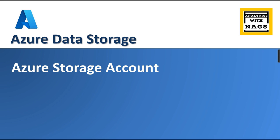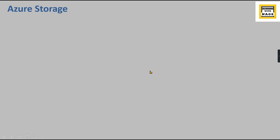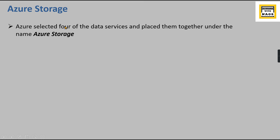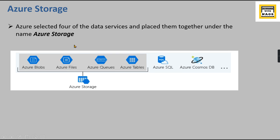If you are new to this channel, hit the subscribe button and press the bell icon for notifications. So Azure Storage — as the definition says — Azure selected four data services and placed them together under the name Azure Storage. Those four are: Azure Blobs, Azure Files, Azure Queues, and Azure Tables.